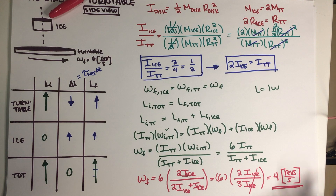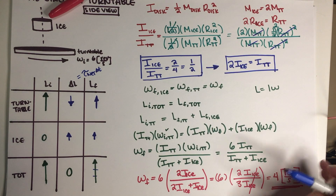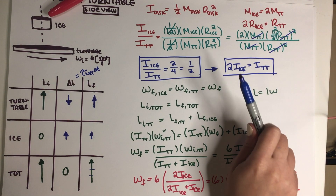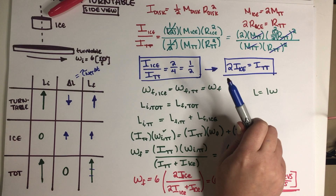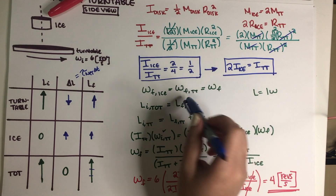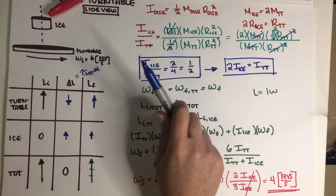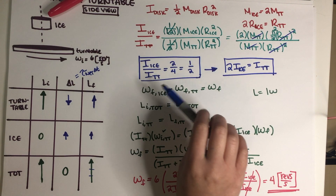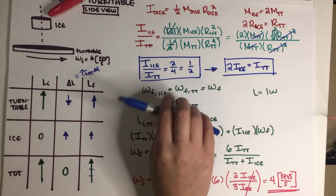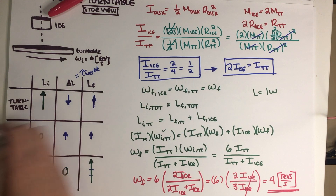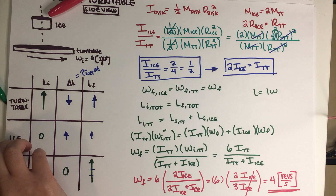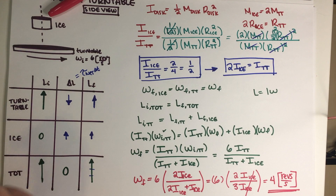Part C: the final angular velocity is 4 revolutions per second. Part D asks: after spinning together for a long time, all the ice melts but the liquid remains within the cylinder. Does the rate of rotation increase, decrease, or stay the same? No numerical calculation is needed here.